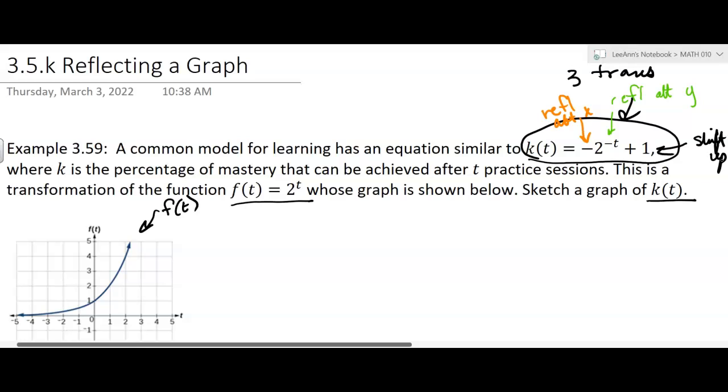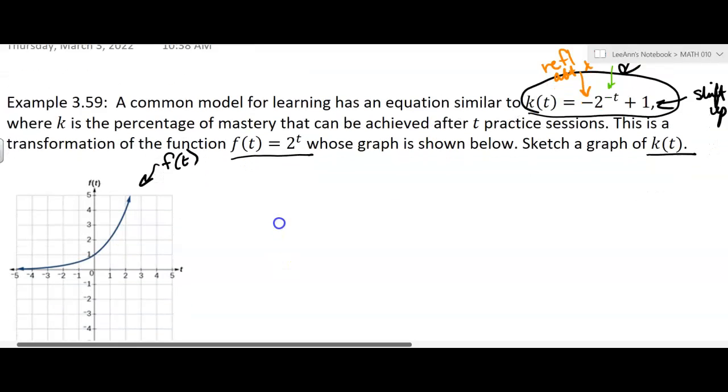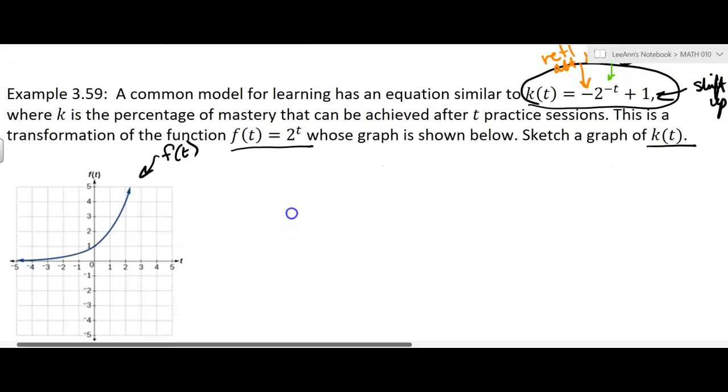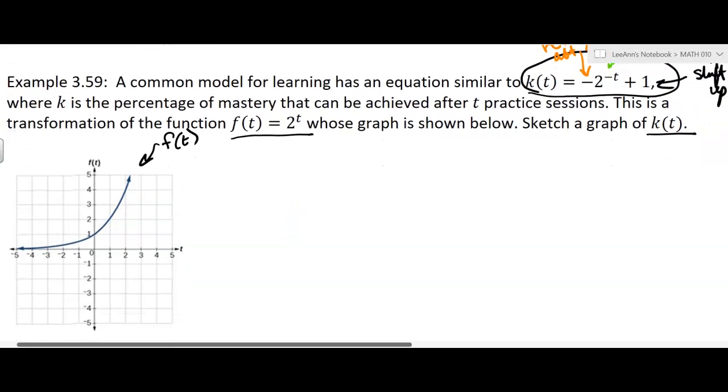We're going to do the transformations in that order. We're going to reflect it about the y, I'll do that in green, and then I'm going to reflect it about the x, I'm going to do that in orange, and then finally I'm going to shift the whole thing up 1. I'm going to do all those transformations on this graph, on the graph where f of t is. Then I'll put my final answer on the other graph because it's going to get messy.